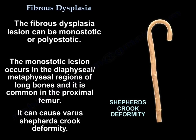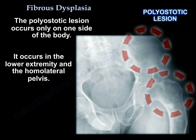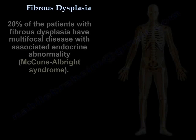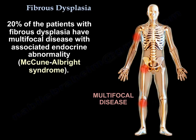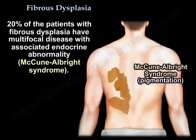The polyostotic form affects only one side of the body — the lower extremity and the homolateral pelvis.